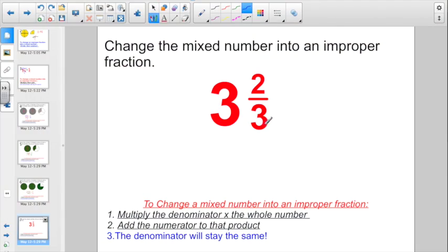Let's try it again now. Just changing the mixed number into an improper fraction. I'll keep saying it. Multiply the denominator times the whole number. 3 times 3. That's 9. Add whatever numerator. 9 plus 2 more. That's going to give us 11. And the denominator stays the same. So if I started with thirds, I'm going to keep it as thirds. 3 and 2 thirds is equal to 11 thirds.